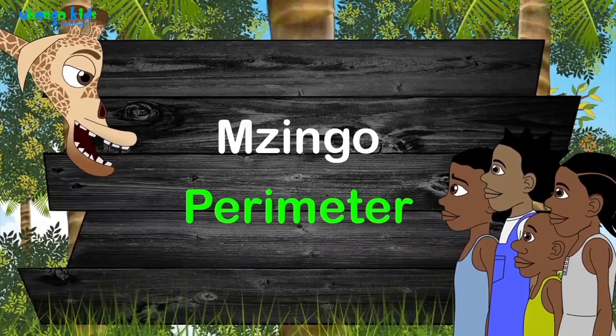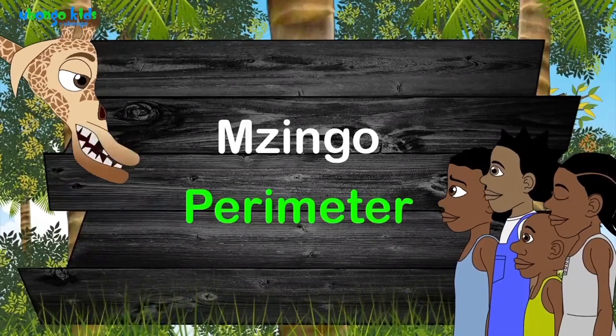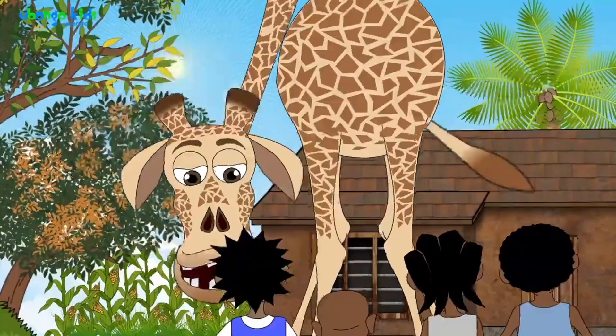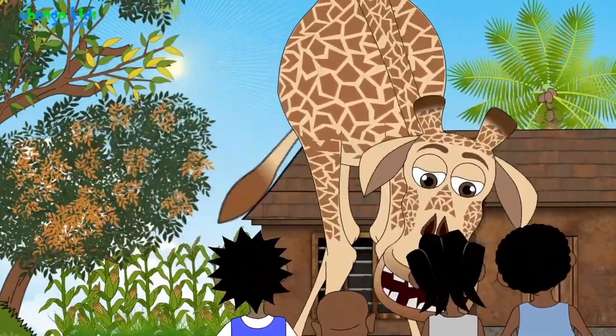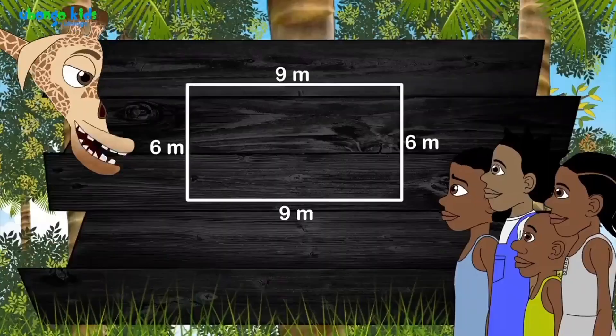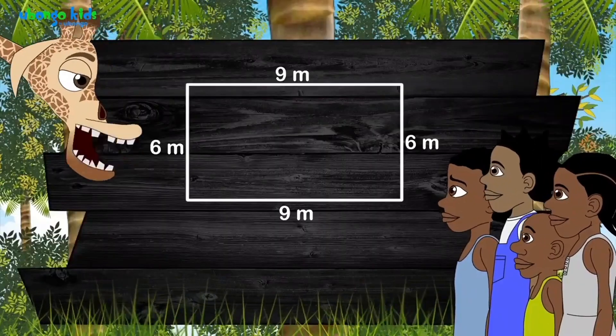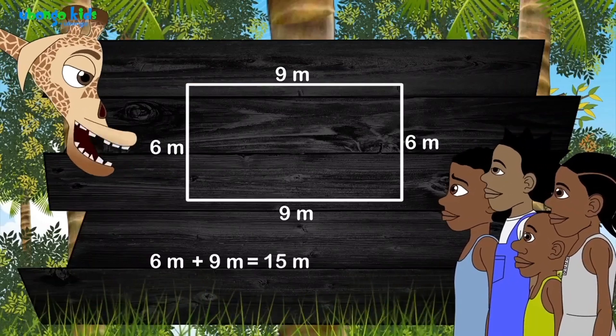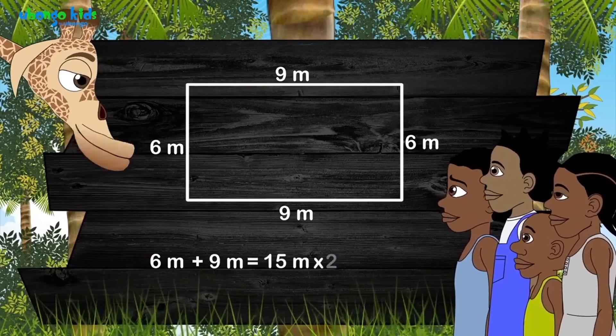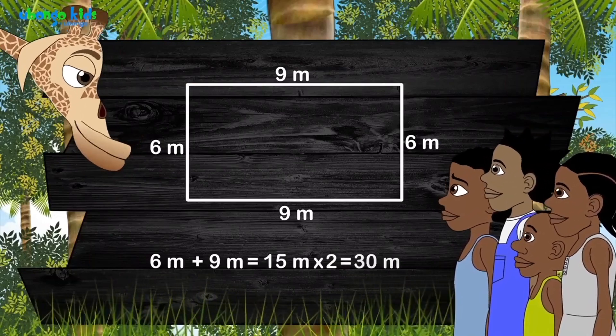There's no big problem — I'm telling you, my friends. The rules are in place to make it easier. The perimeter of the rectangle is easy to calculate. What are you waiting for? Just multiply by two.